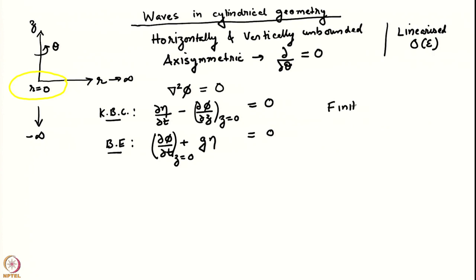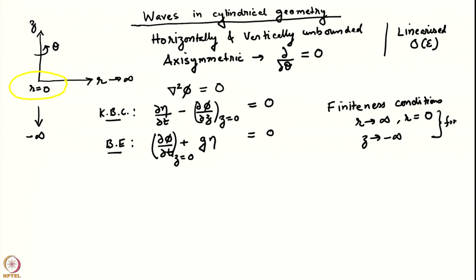We have finite conditions because our domain is unbounded. We have to make sure that as r → ∞ — and in this case we also have to worry about r = 0 — and as z → −∞, everything remains finite. That will eliminate some constants of integration. Now let us specify the initial condition as A₀.